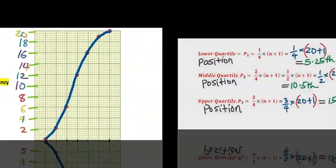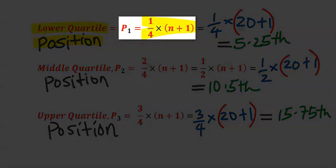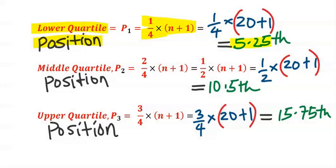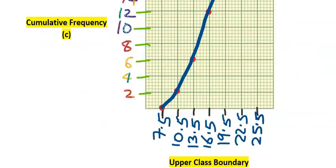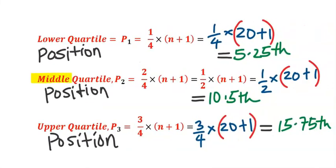Next, to calculate the lower quartile, we first find the lower quartile position using the formula. When you substitute, you get the 5.25 position. From the cumulative frequency column, the 5.25 position is located here — we trace it down and the lower quartile is 12.5.